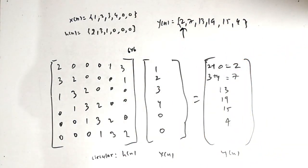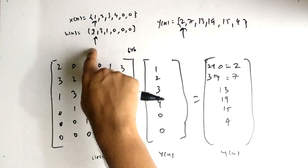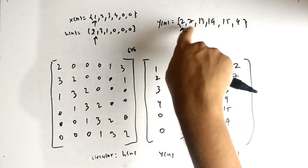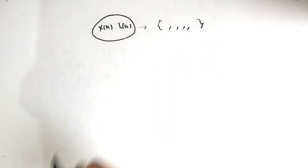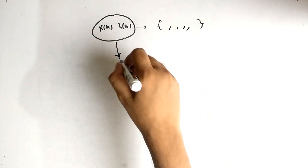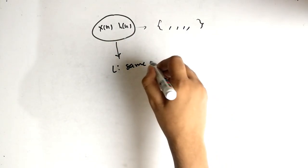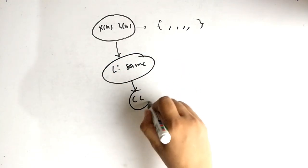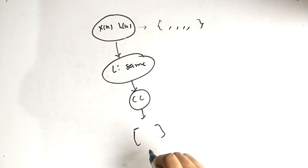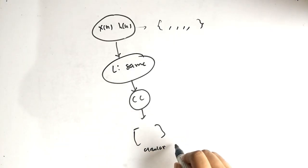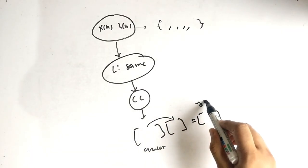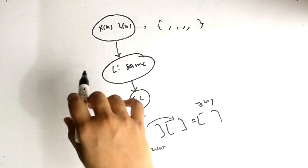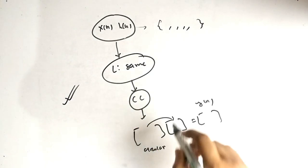The result starts at the origin, so the arrow means at n=0 the value is 2, and so on. To recap: we had equations for x(n) and h(n), simplified them into amplitude form, made the lengths equal for circular convolution, filled the circular matrix, and multiplied to get the final answer y(n). This is the flow to find y(n) using circular convolution.